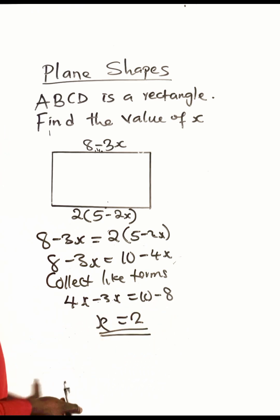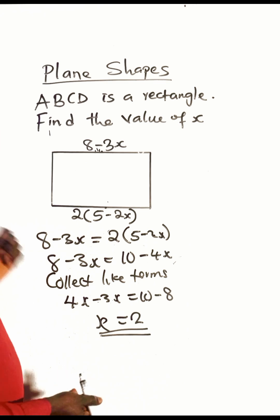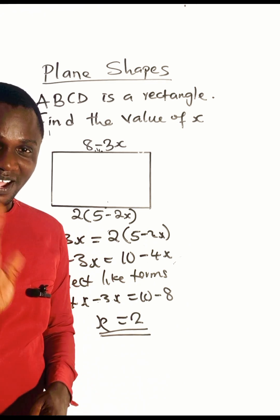Ten minus eight gives us 2. Therefore the value of x is 2. Thanks for watching, see you in the next video, bye bye.